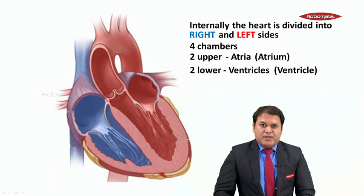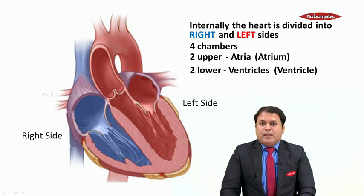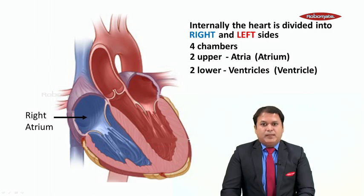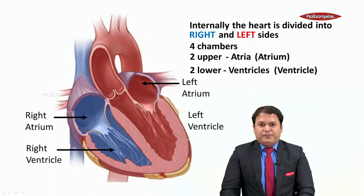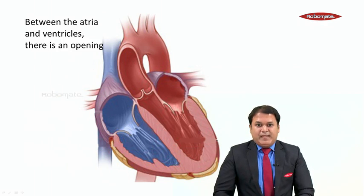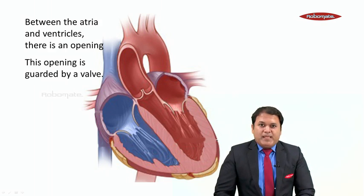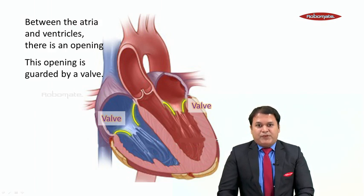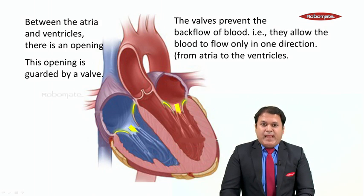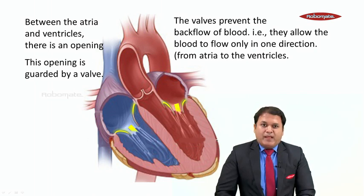You can see the atria which are the upper chambers and the ventricles which are the lower chambers. Our heart is divided into a right side and a left side, giving four chambers: the right atrium, the right ventricle, the left atrium, and the left ventricle. Between the atria and ventricles on both the right and left sides, there is an opening guarded by a structure called a valve. These valves prevent the back flow of blood, allowing blood to flow only in one direction — from the atria to the ventricles — so blood cannot flow back from the ventricles to the atria.